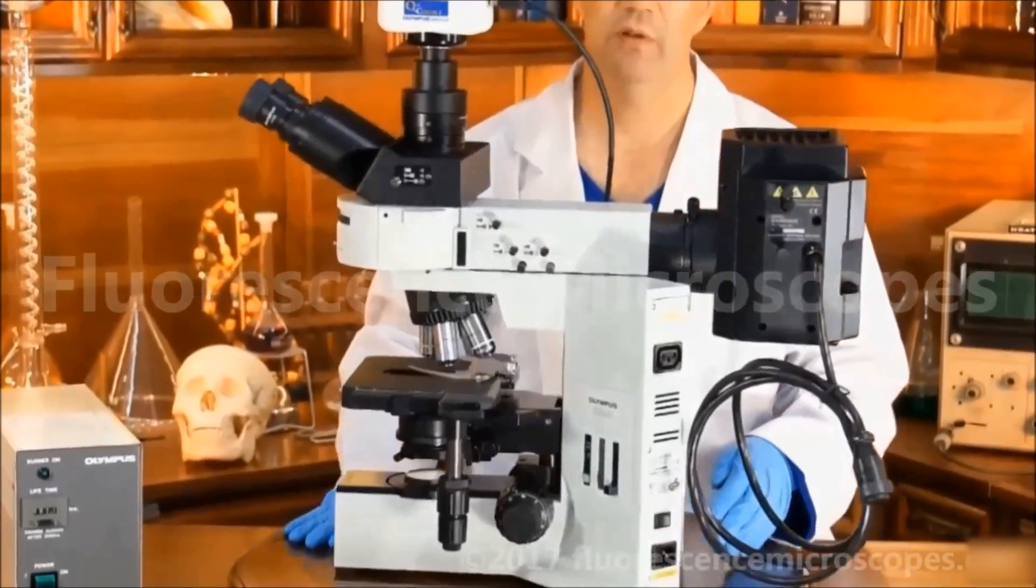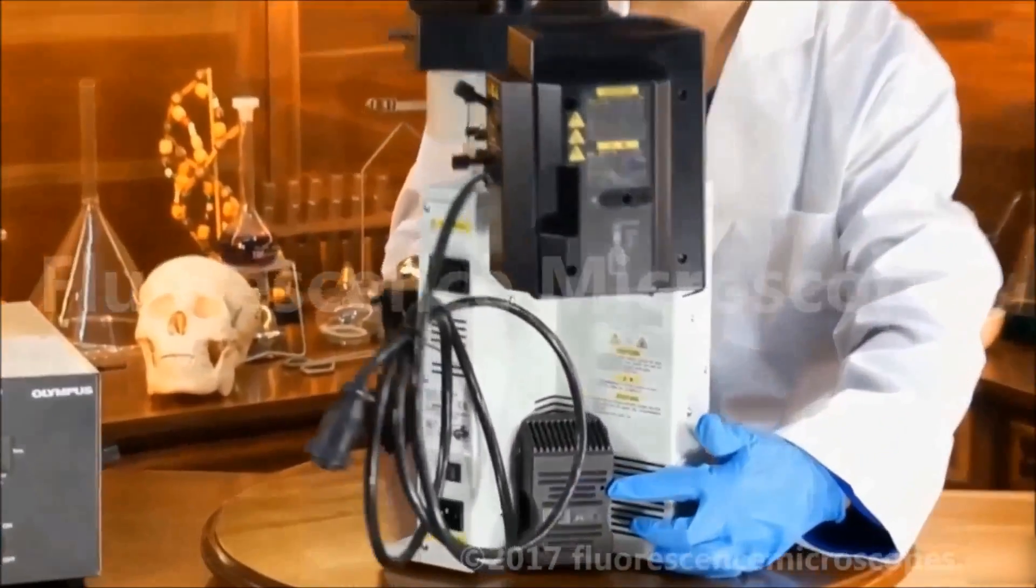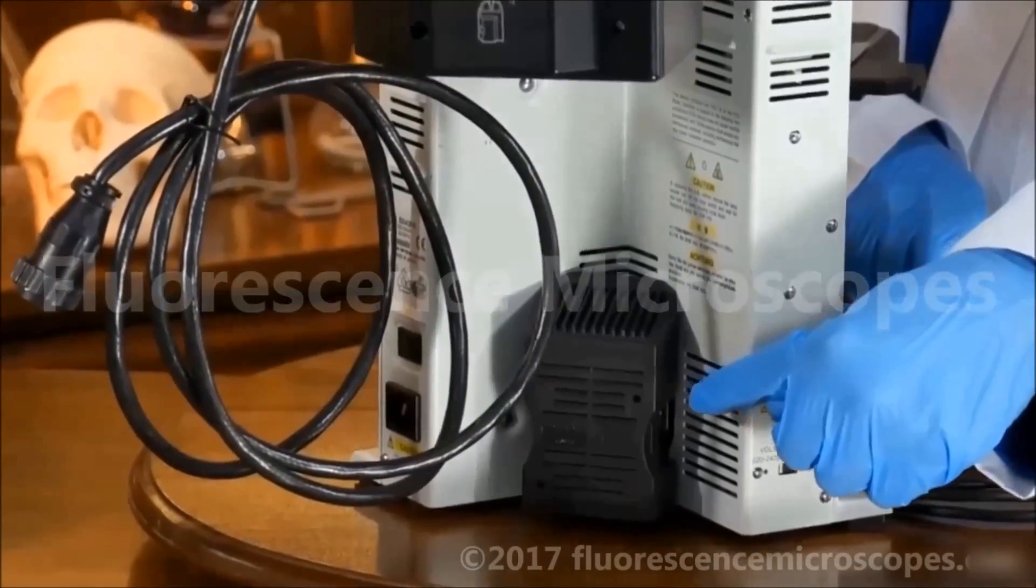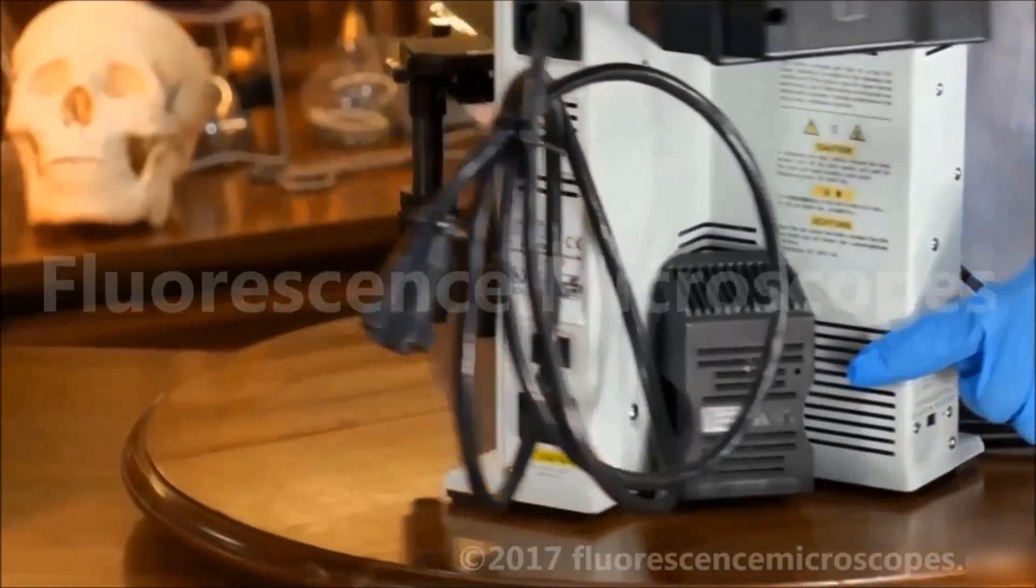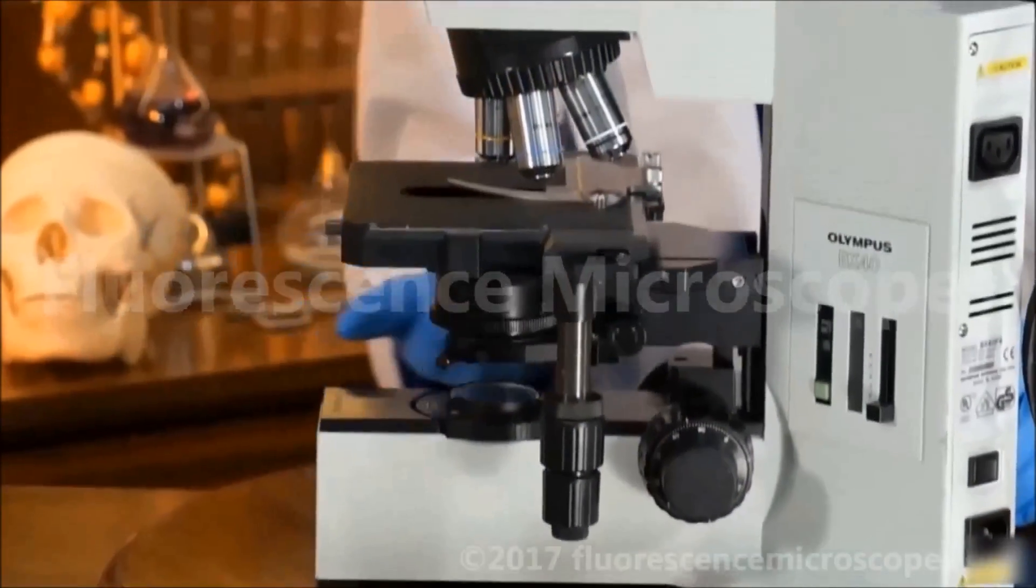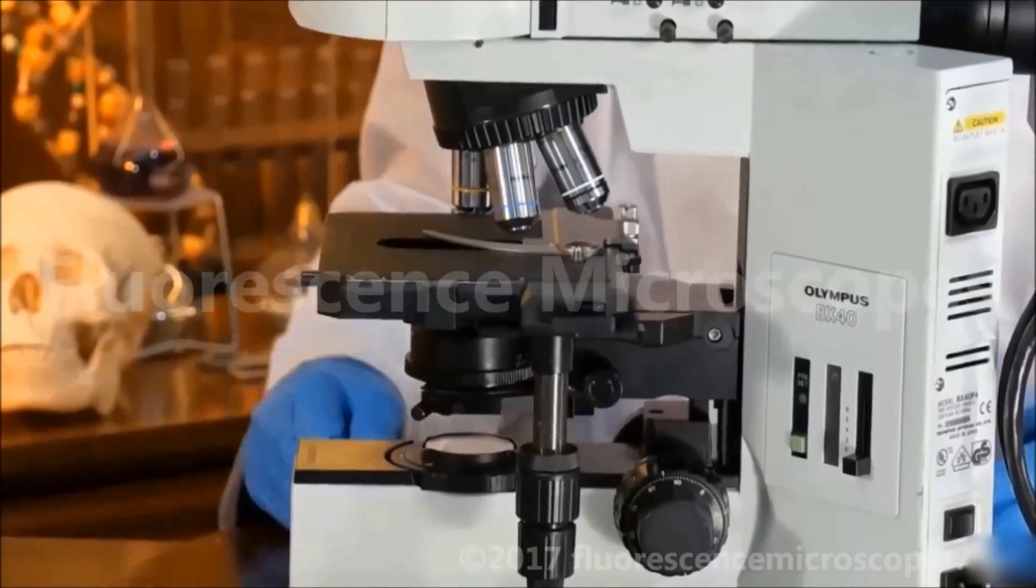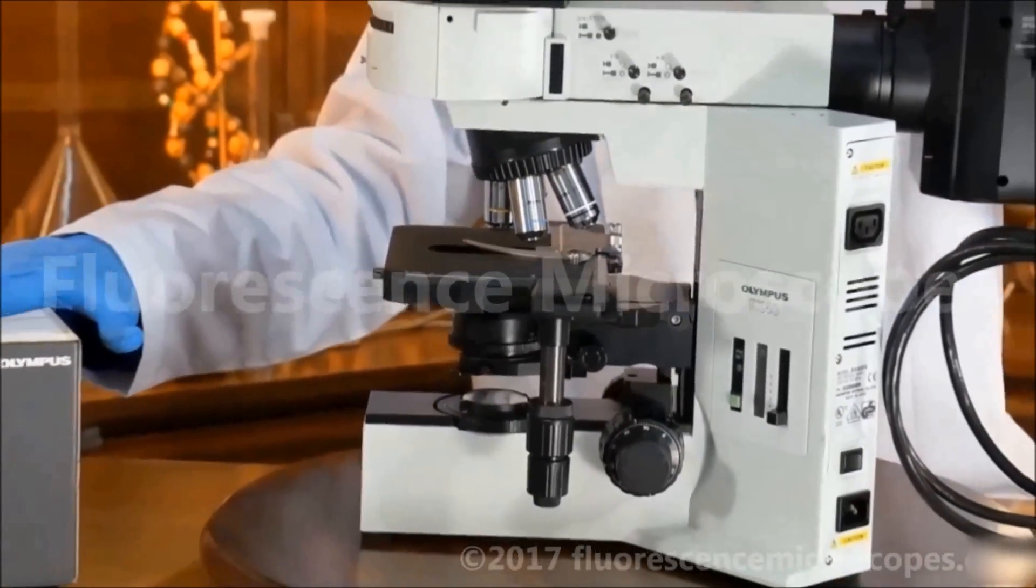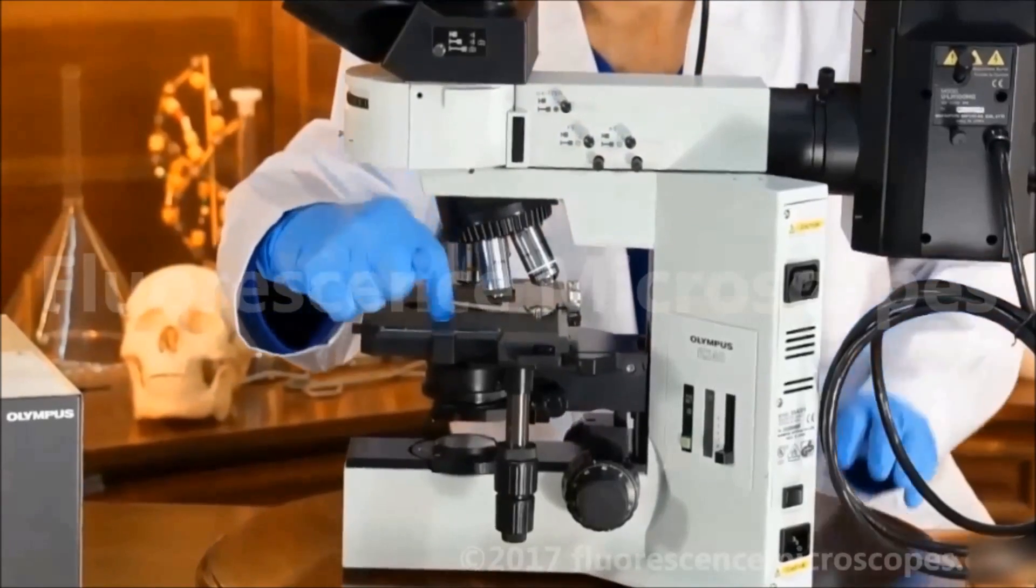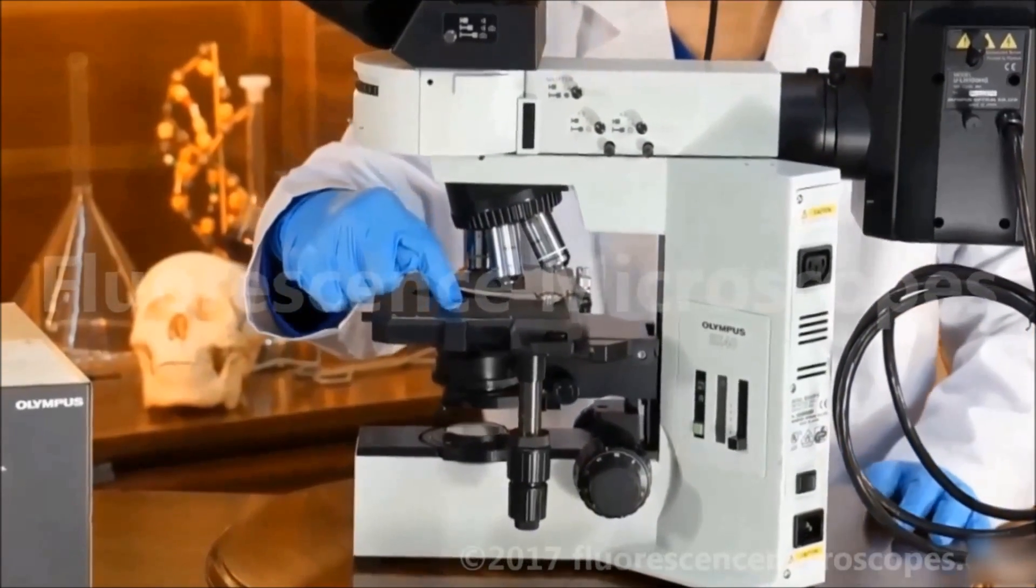We have a 6-volt, 30-watt halogen illuminator, transmitted illuminator at the back that transmits the light this direction, and through the slide from the bottom. Our incident illuminator goes through the vertical illumination system and down, reflecting off of the specimen.